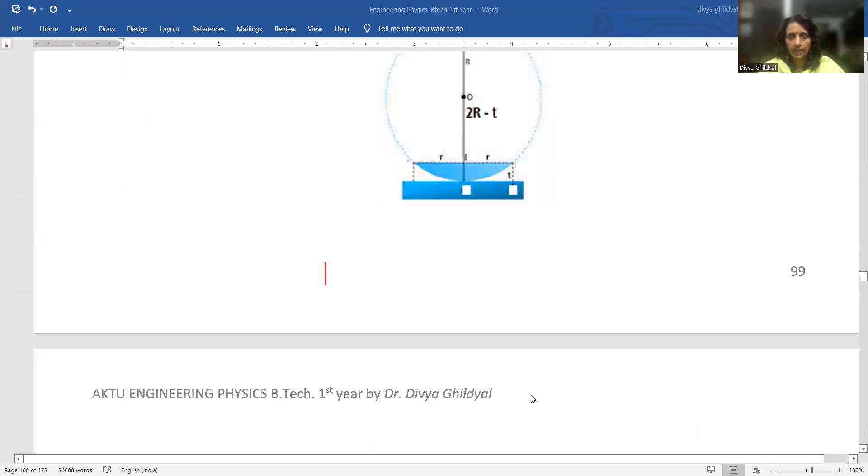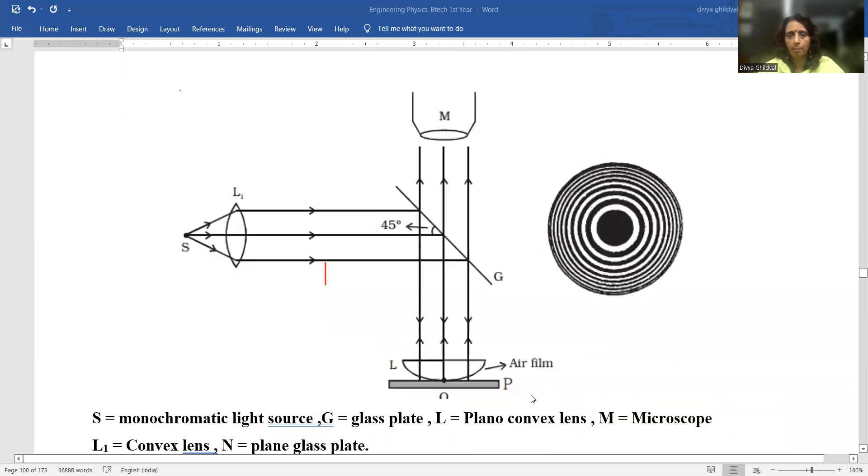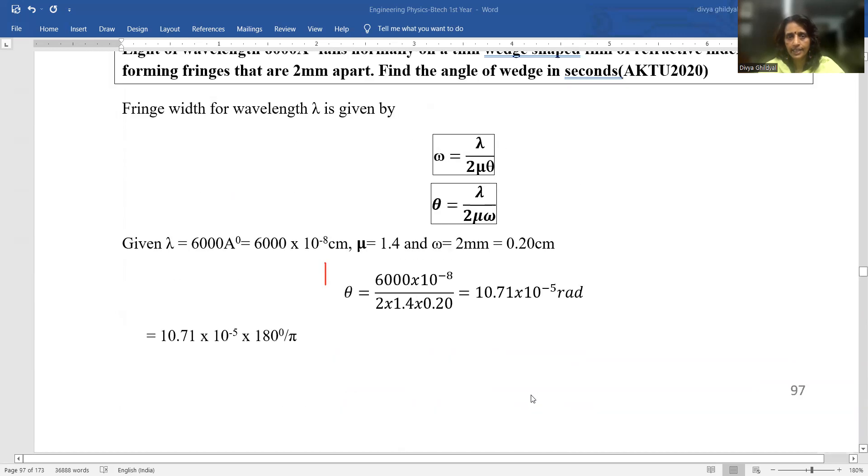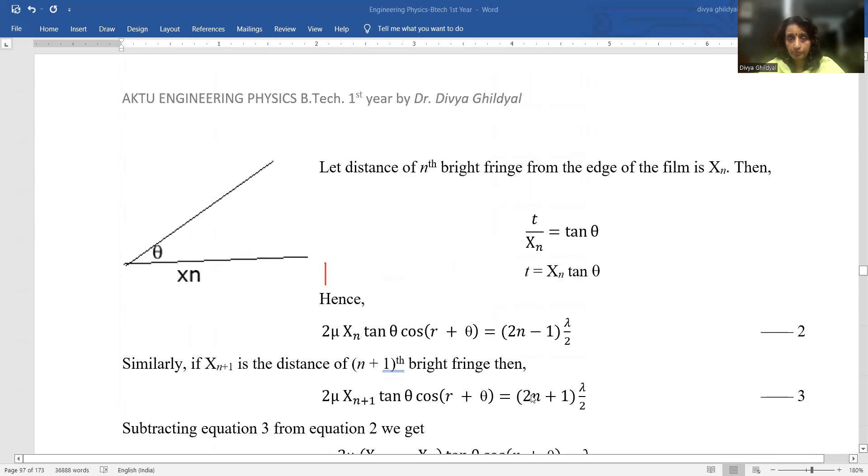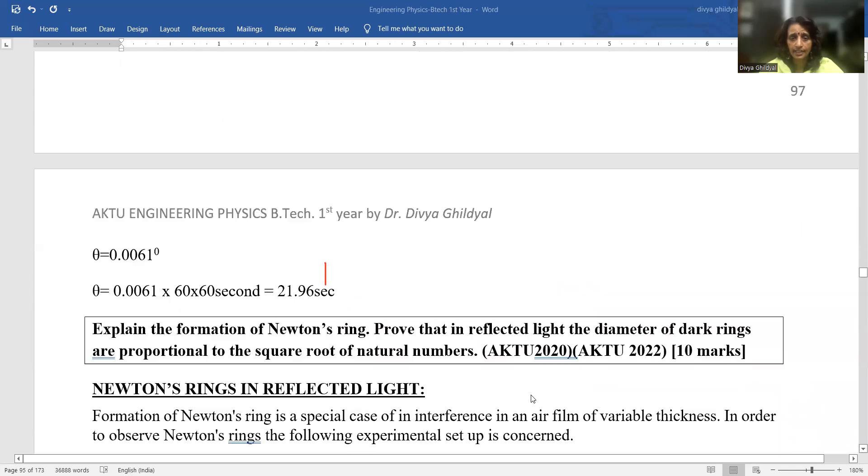Wedge shape thin film path difference is 2μT cos(R+θ) + λ/2 for reflected light and 2μT cos(R+θ) for transmitted light.